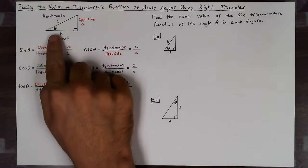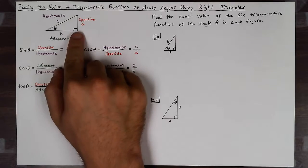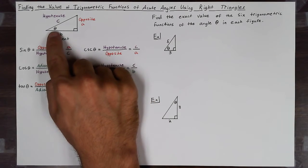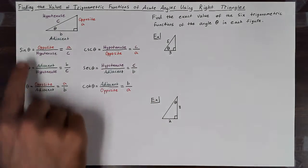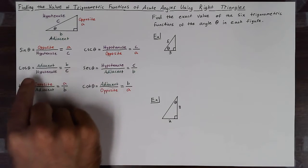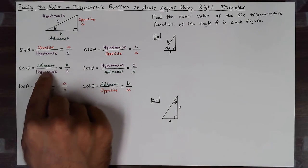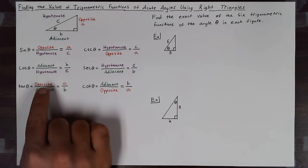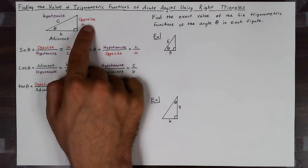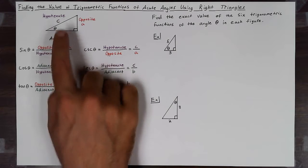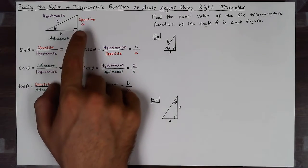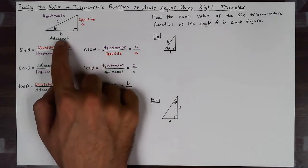I drew a right triangle here labeled sides a, b, and c with a given angle theta. Sine is opposite over hypotenuse, cosine is adjacent over hypotenuse, and tangent is opposite over adjacent. Using those sides: a over c for sine, b over c for cosine, and a over b for tangent.